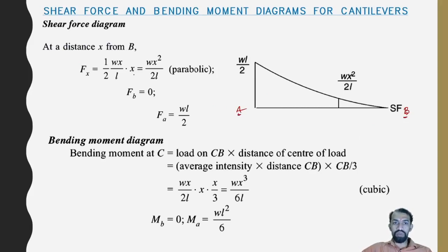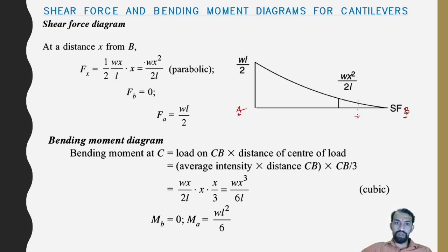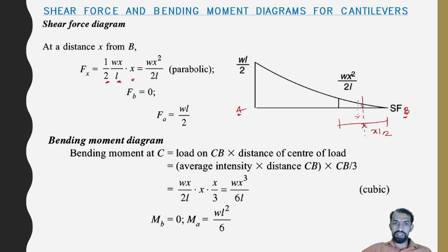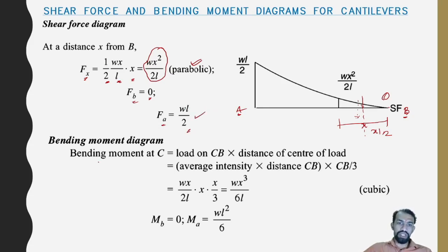The shear force at distance x from B is: Fx = (1/2) × (w×x/L) × x = w×x²/(2L), which is parabolic. At B (free end), FB = 0. At A (fixed end), FA = w×L/2. So the shear force diagram is a parabolic curve.